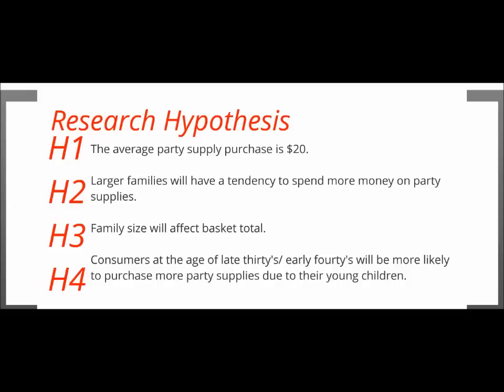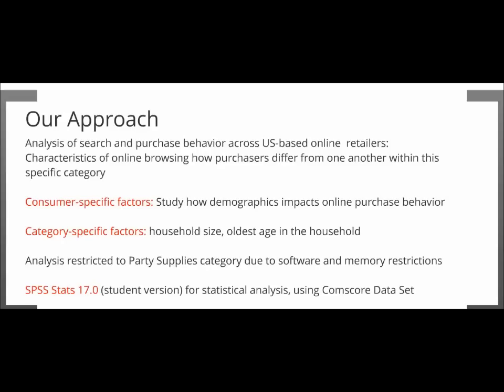The approach here is the analysis of search and purchase behavior across US-based online retailers. The characteristics of browsers within the party supply industry — consumer-specific factors would be studying demographics that impact online purchasing behavior. Categorical specific factors would be households, and another example would be the oldest age in households. Analysis was restricted to the file that was given, with some memory restrictions between the computer. The program we were using was SPSS Stats 17.0 student version based on those comscore data sets.